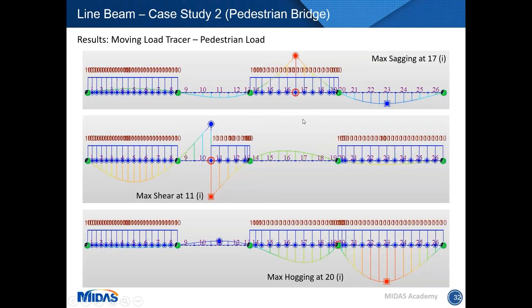Some of the results you can obtain include moving load tracer for sagging, shear, or hogging. In addition to load positions, Midas also gives you the influence line diagram in the background, showing influence lines for sagging, shear, hogging, deflections, and reactions as well.